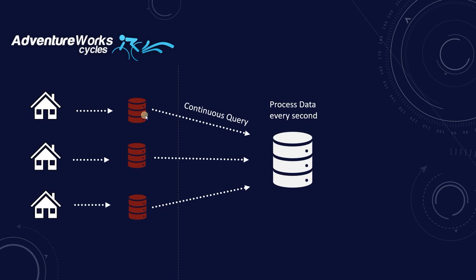With stream processing, data is fed into an analytic system piece-by-piece as soon as it is generated. Instead of processing a batch of data over time, stream processing feeds each data point or micro-batch directly into an analytics platform. This allows teams to produce key insights in real time. Stream processing is ideal for projects that require speed and nimbleness; however, the method is less relevant for projects with high data volumes or deep data analysis.